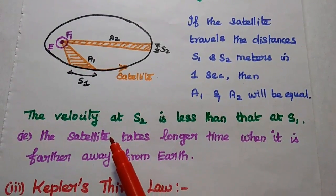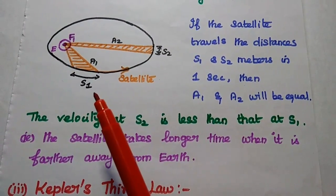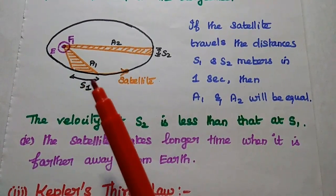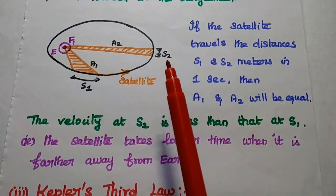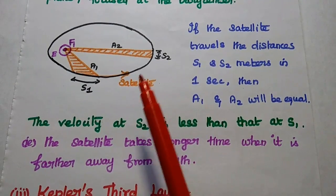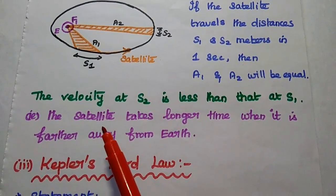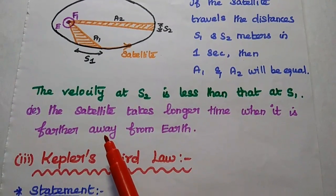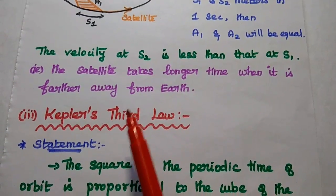Here we can say the velocity at S2 is less than that at S1 because the distance S1 is closer to the Earth, so that velocity is higher. But at distance S2, the velocity is less than at S1 because it is far away from Earth. The satellite takes longer time when it is farther away from Earth. That is Kepler's second law.